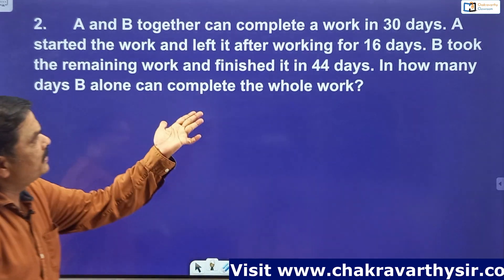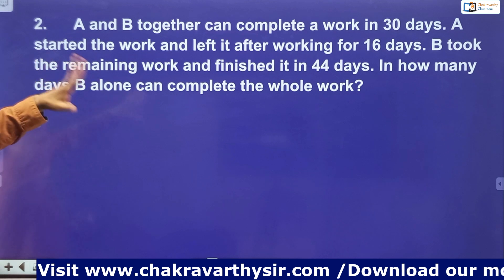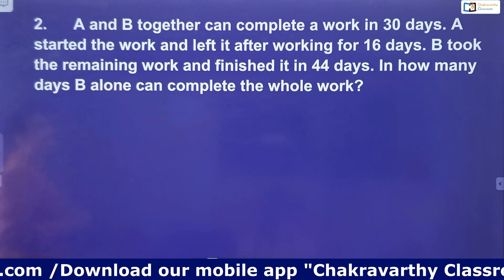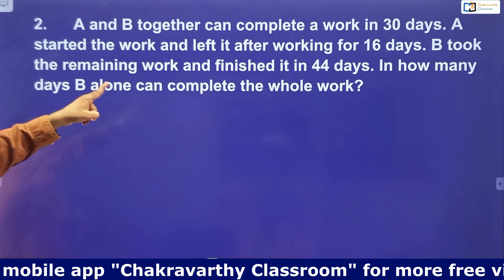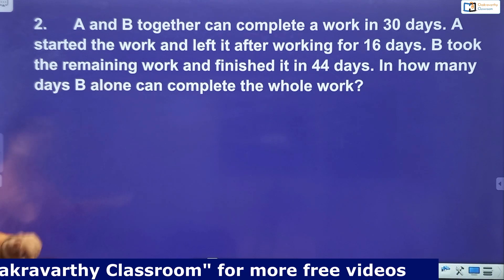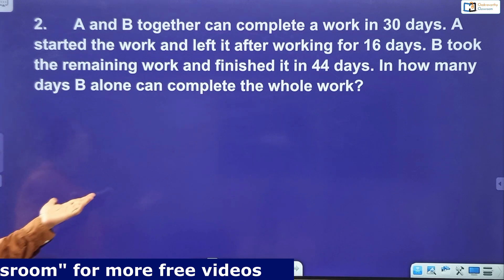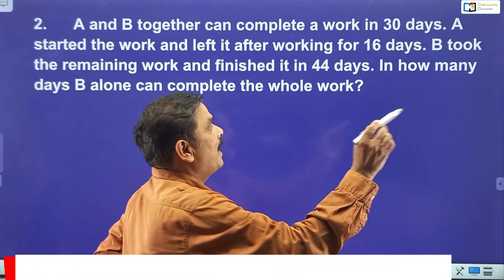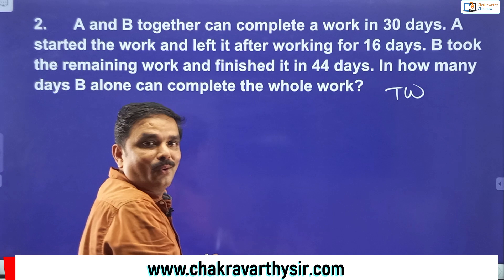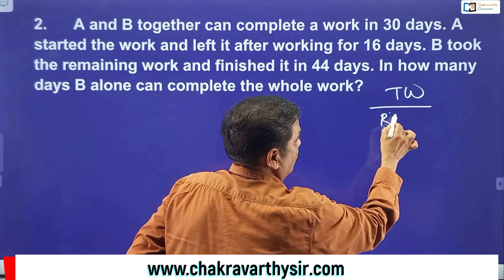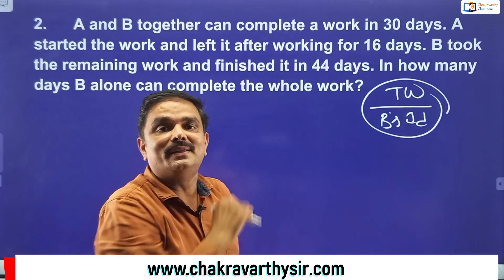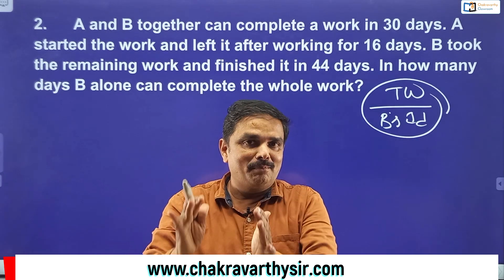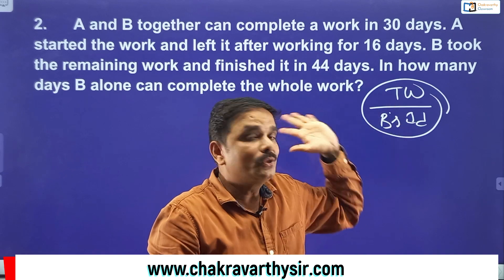How to go with the LCM method — first, read the question properly. A and B together completed the work in 30 days. A started the work and worked for 16 days, then left. B completed the remaining work in 44 days. The question is: in how many days can B alone complete the whole work? I need total work first, divided by B's one day's work. In the LCM method, we take the LCM of two or three numbers as total work.